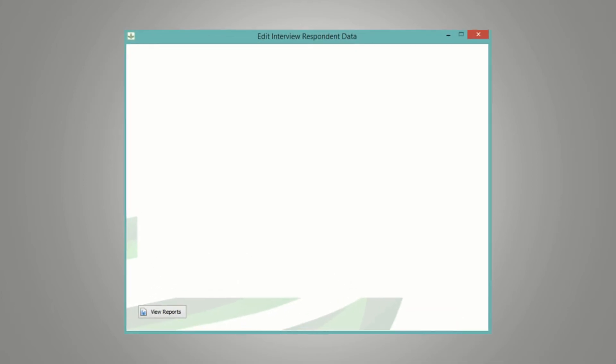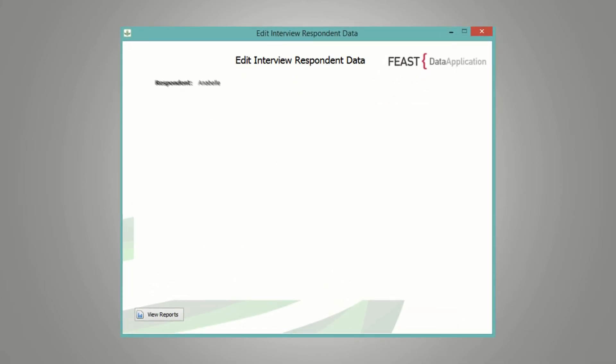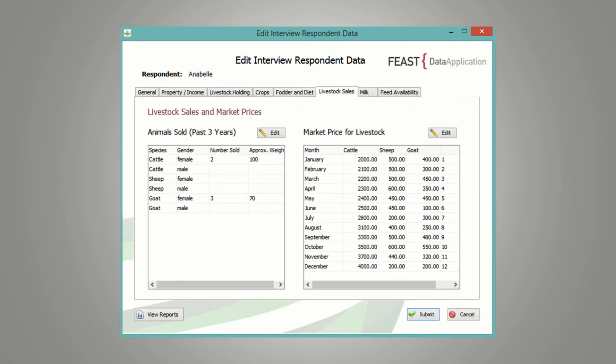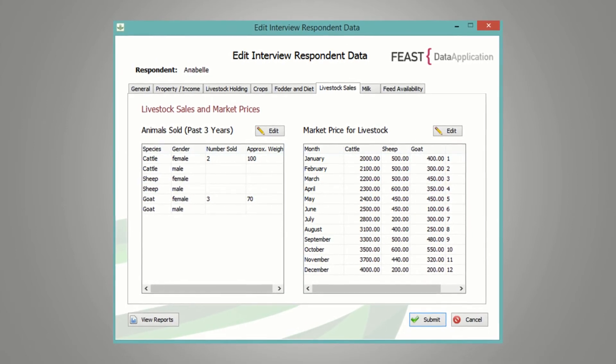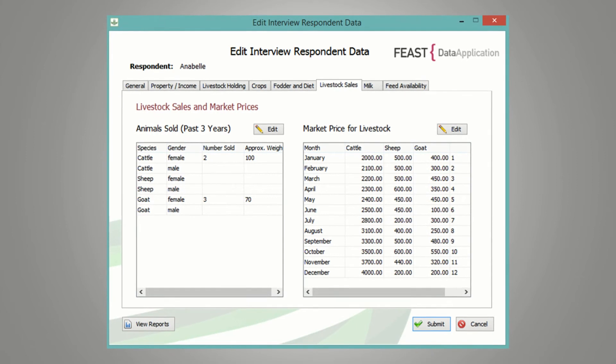After the focus groups comes a detailed questionnaire with individual farmers. This covers the farmer's land holding and income, livestock crops, the fodder he or she grows or buys, livestock sales and market prices, milk production and feed types and availability.